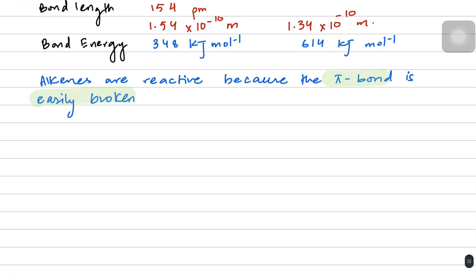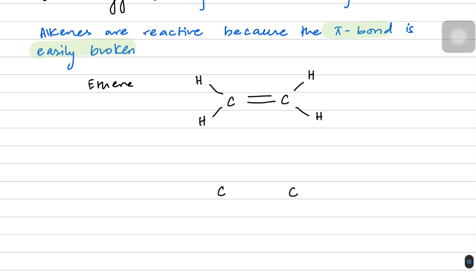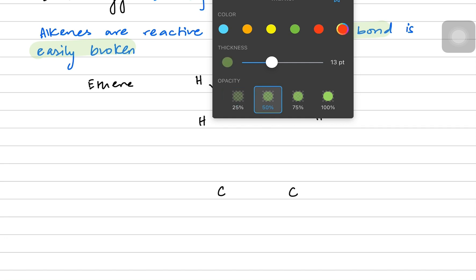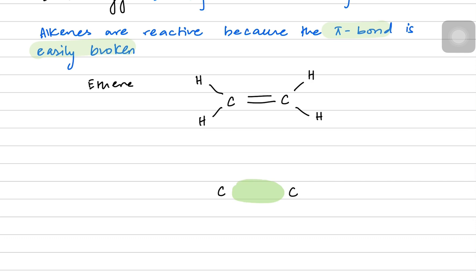Now, how is the pi bond broken? Let's look at the structure of ethene. In ethene, there are two carbon atoms with a double bond and four hydrogens. In the 3D structure, there are two carbon atoms with sigma bond density between them, formed by head-on overlap. The hydrogens also make sigma bonds with the carbon atoms through s-p overlap.